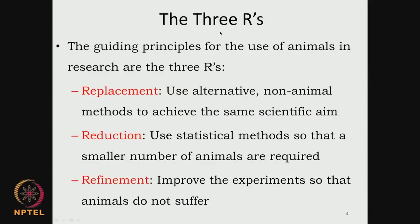There are 3 important guiding principles when you are looking at animals. They are called the 3 R's in animal research: replacement, reduction, and refinement.